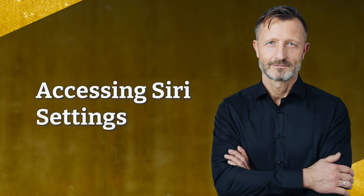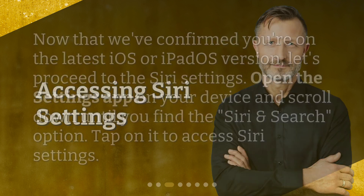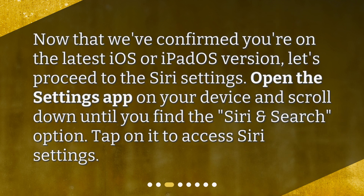Accessing Siri settings. Now that we've confirmed you're on the latest iOS or iPadOS version, let's proceed to the Siri settings. Open the Settings app on your device and scroll down until you find the Siri and Search option. Tap on it to access Siri settings.